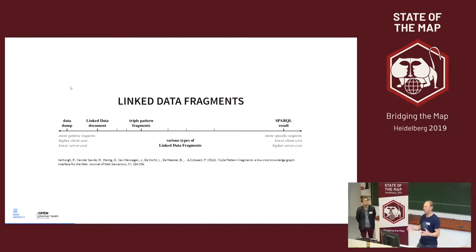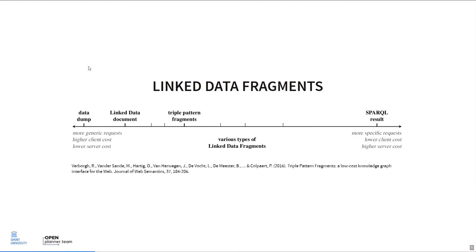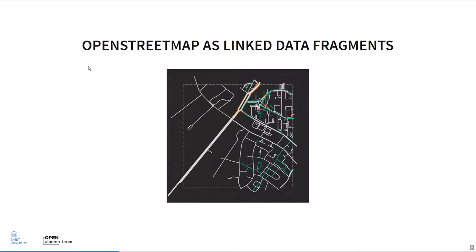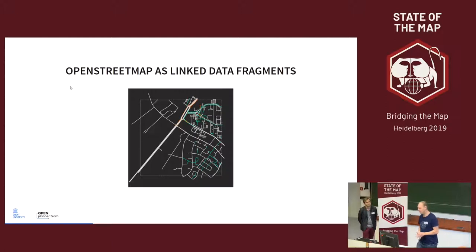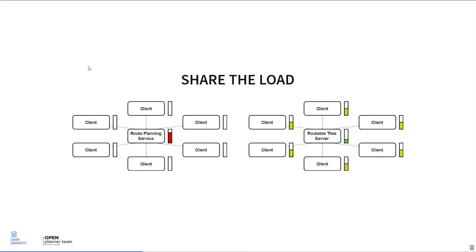On the left side you have a data dump — you publish the whole dataset in one go, comparable to the planet OSM file. On the right you have a service you can query without publishing any data, comparable to Overpass. What we did is publish OpenStreetMap as linked data fragments: we use a tiling system, made a decent ontology for the tags, figured out how to publish this for the whole planet, and published it as JSON-LD data.